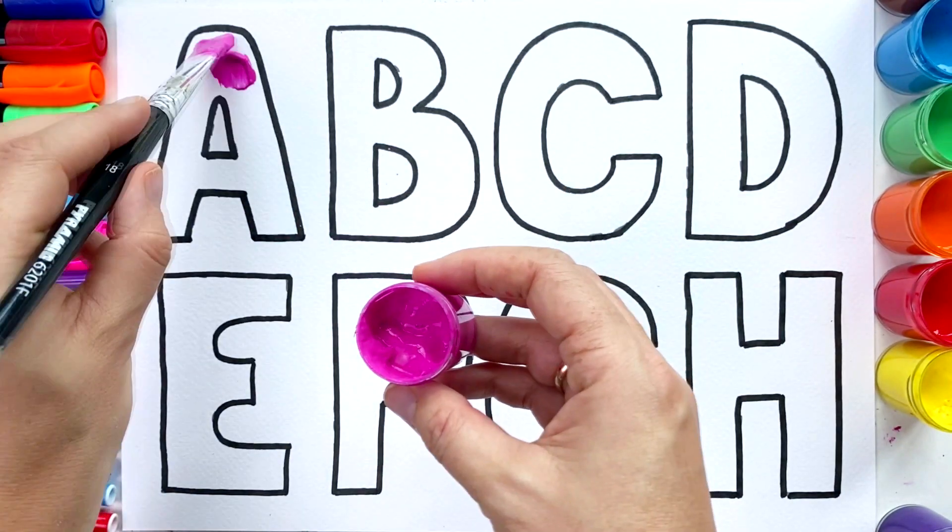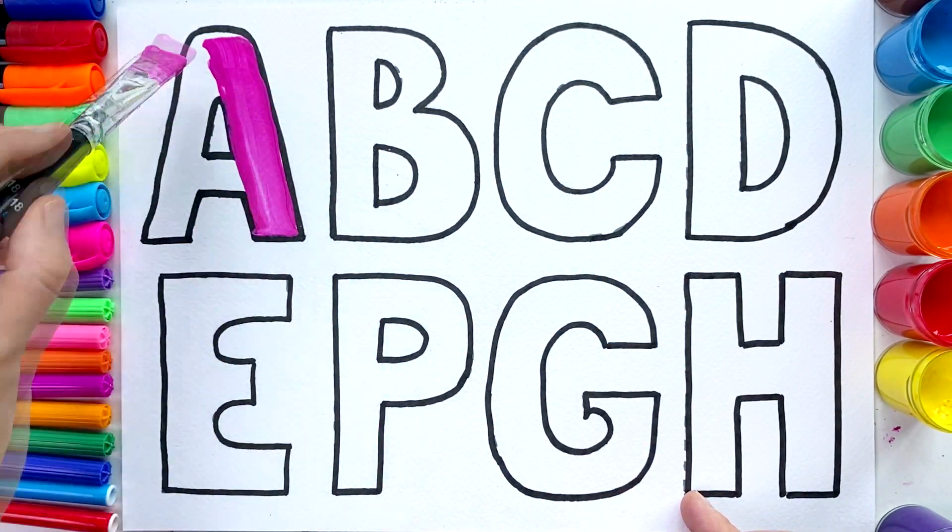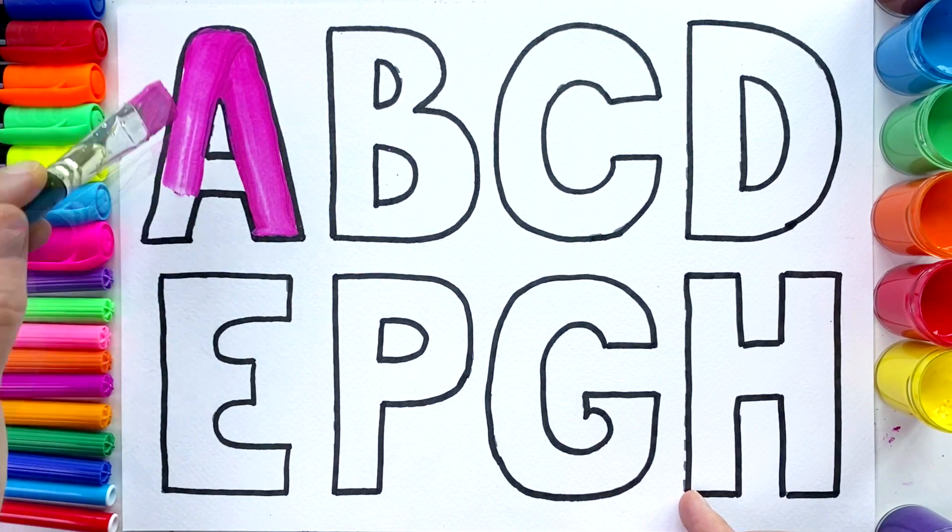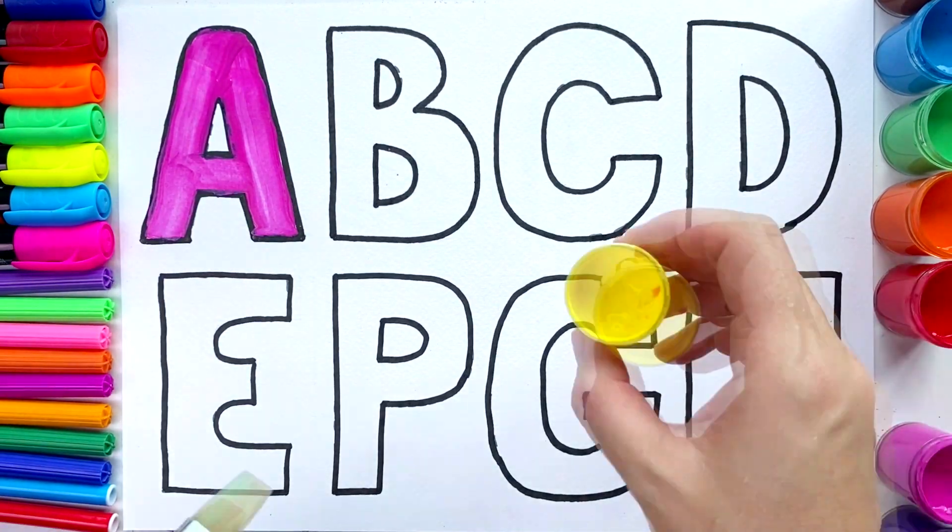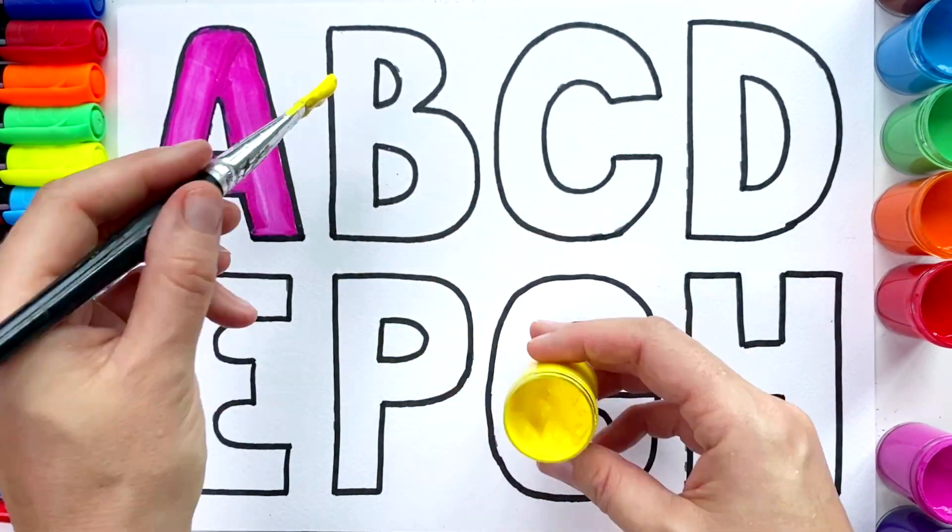Time to color in the letters. A will be pink. B will be yellow.